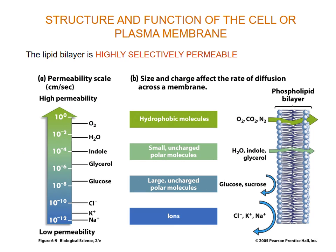Here is a really nice summary diagram which you should use when revising your notes. It gives you on the left-hand side a scale of permeability — how easily or how difficult it is for molecules to move across the membrane. Right down at the bottom in blue, it means it's very difficult for those molecules to move across, whereas right at the top in green where we have oxygen, those molecules can move across quite quickly.